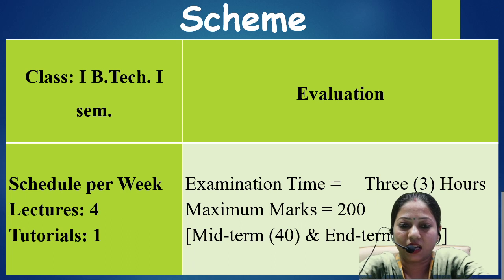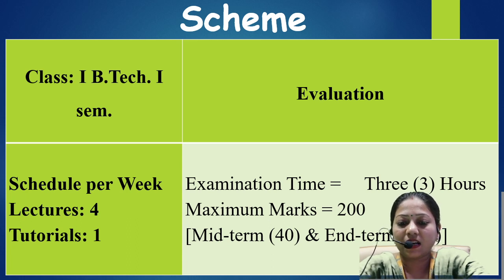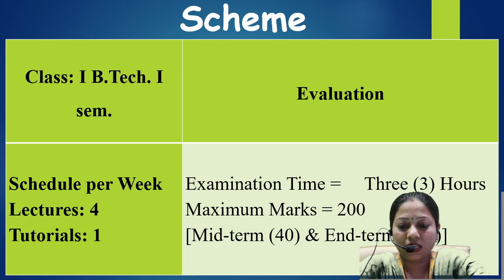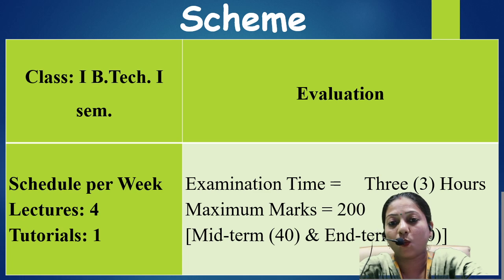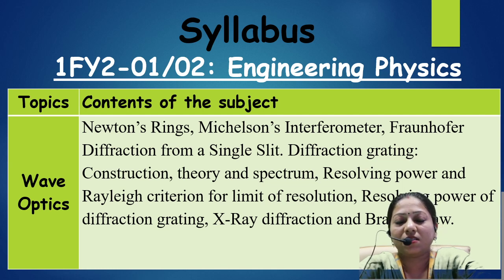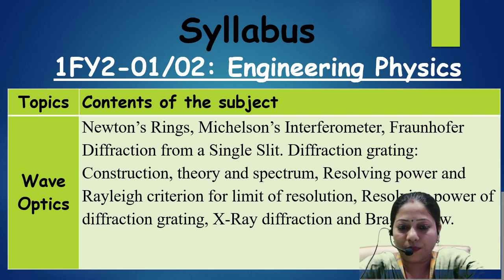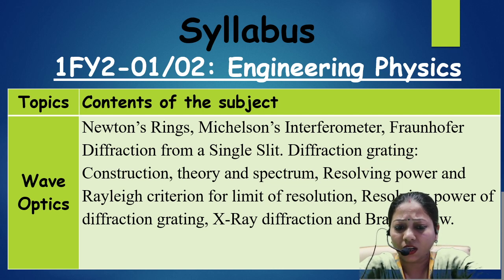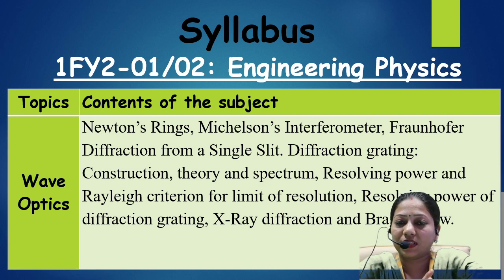Now let's discuss the scheme. In first year or first semester, there are four lectures per week and one tutorial. The examination is three hours long with total marks of 200: mid-term is 40 marks and end-term is 160 marks. The syllabus code is 1FI2-01-02 for second semester. The syllabus is divided into six modules. The first module covers wave optics — topics like interference, diffraction, x-ray diffraction, Newton's rings, and Michelson interferometer, which are phenomena based on interference of light.